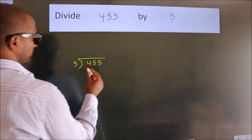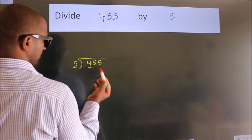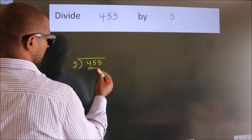Next, here we have 4. Here 5. 4 is smaller than 5, so we should take 2 numbers: 45.